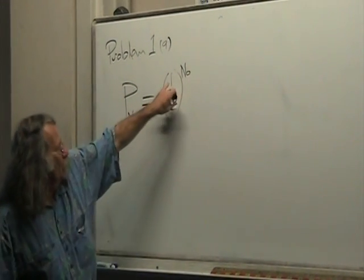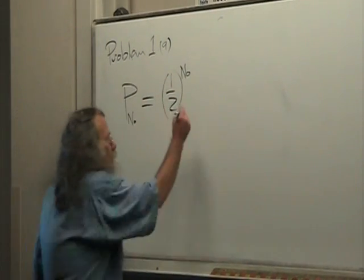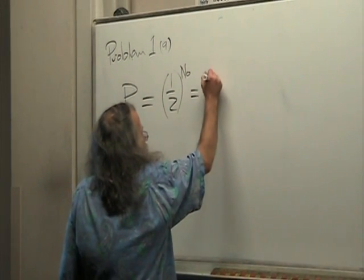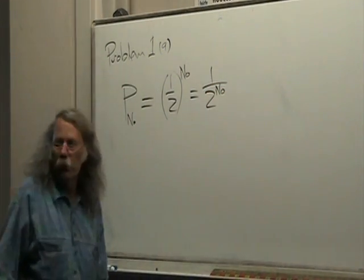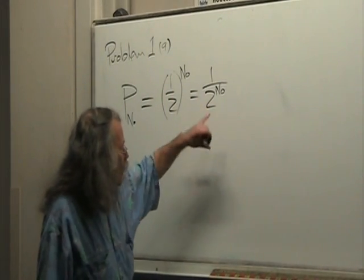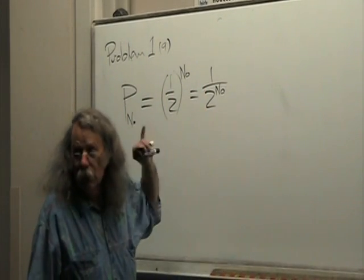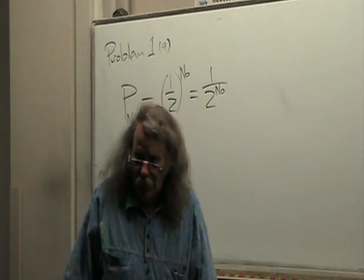And so, because one taken to any power is one, this is equal to one over two to the N naught. And so now in order to put this in, there's a one in two to the N naught probability or chance that this is going to occur.